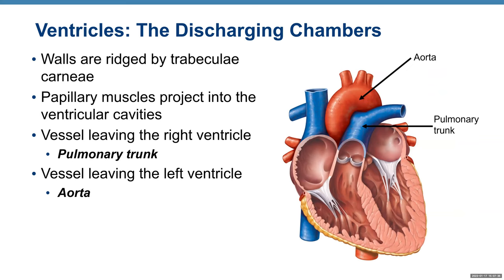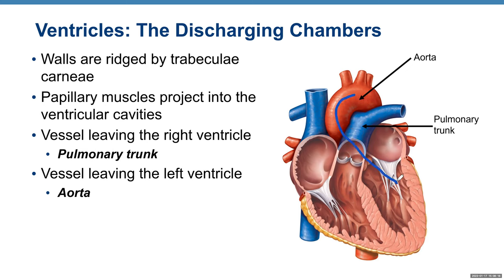Ventricles are discharging chambers with walls ridged by trabeculae carneae muscles and papillary muscles that project into the ventricular cavities. Vessels leaving the right ventricle include the pulmonary trunk — an artery since blood is going away from the heart. The vessel leaving the left ventricle is the biggest blood vessel in your body: the aorta.